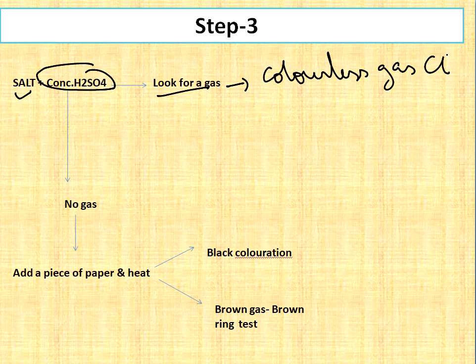First of all, if colorless gas is there, then it will be chloride ion and the gas will be HCl. Second one, if brown color is there, and the gas will be Br2, then the anion will be bromide, Br-.